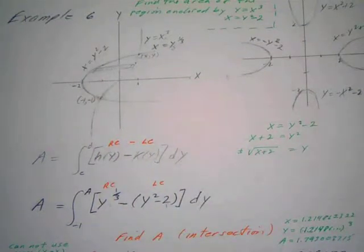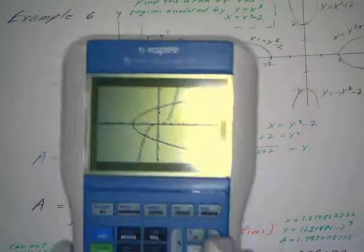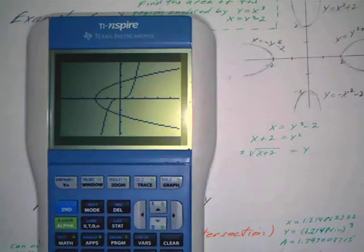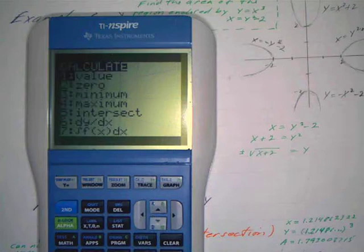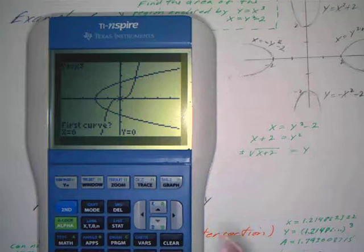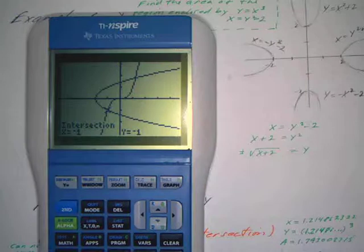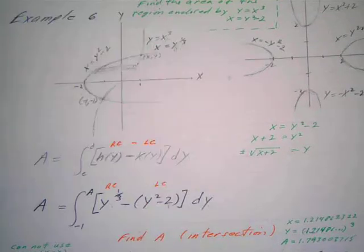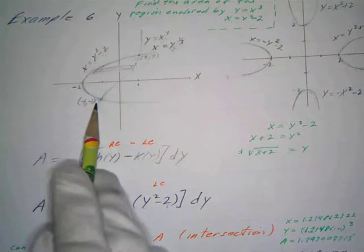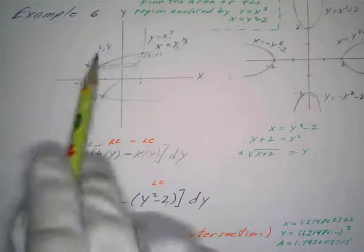To get the limits of integration I need the intersection points. On the calculator, go to Second Trace (Calculate), hit 5 for Intersect. Move down to find the lower intersection — Enter for first curve, Enter for second curve — and we get negative 1, negative 1. So the lower limit of integration is y equals negative 1.